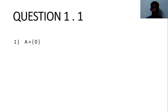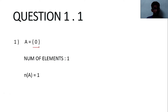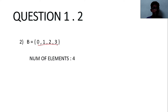So let us take A = {0}. The cardinal number represents the number of elements in a set. In this set we have one element, which is 0, so the cardinal number of A will be 1. For B = {0, 1, 2, 3}, there are four elements in this set, so the cardinal number of B will be 4.